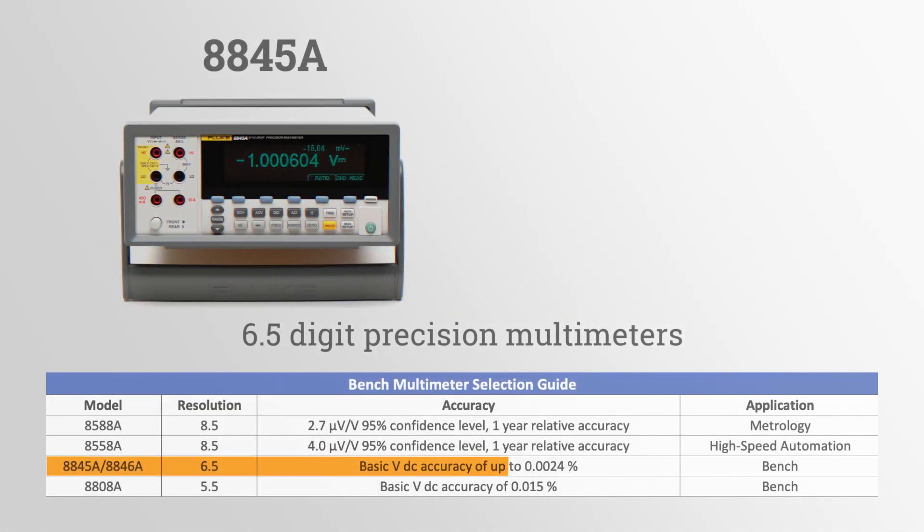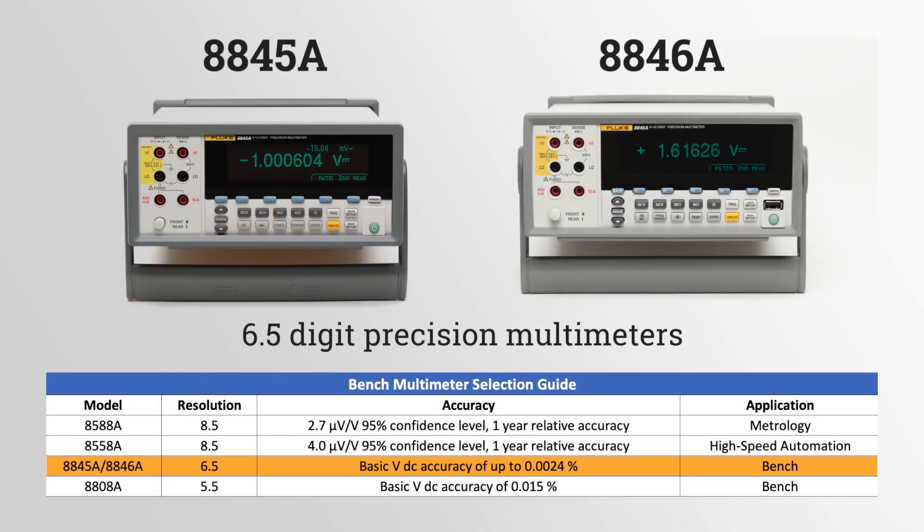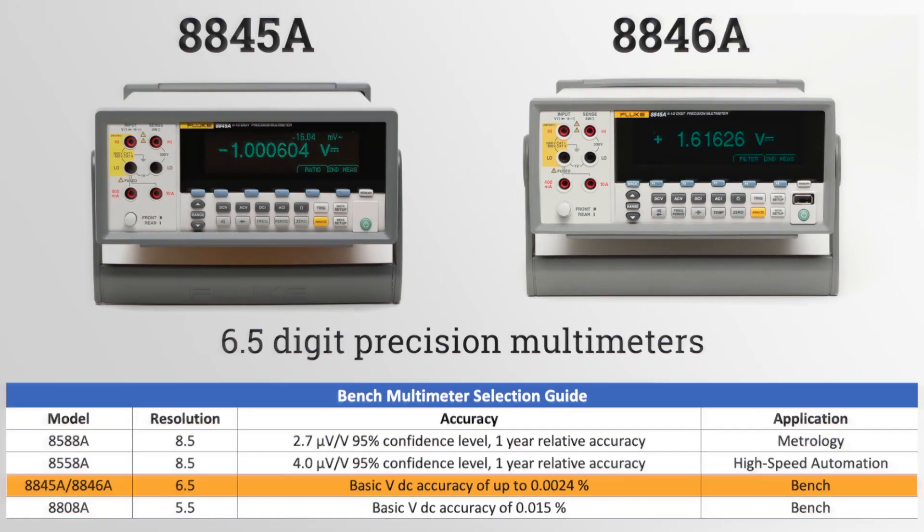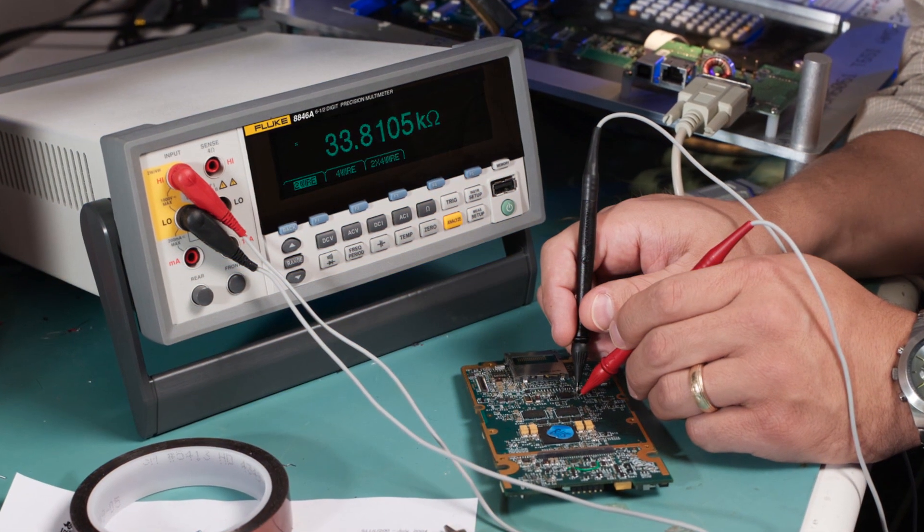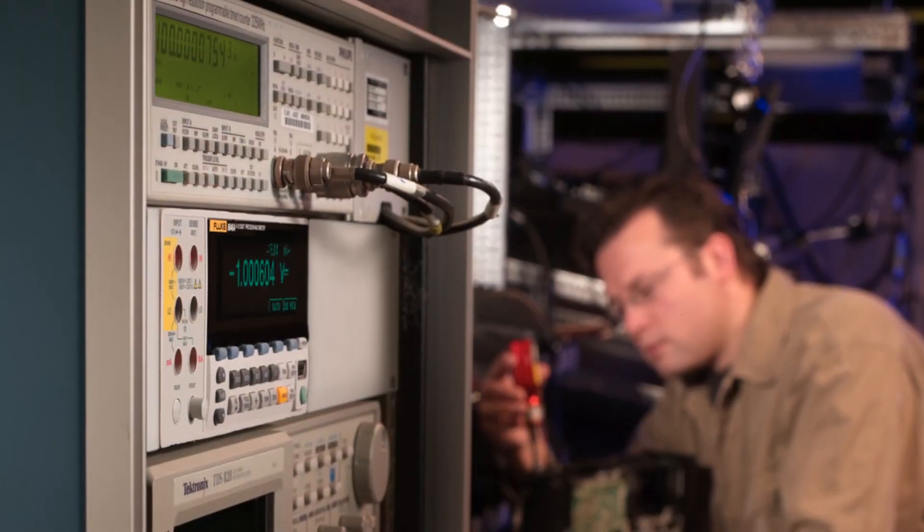The 8845A and the 8846A 6.5 digit precision multimeters provide precision and versatility for bench or system applications.